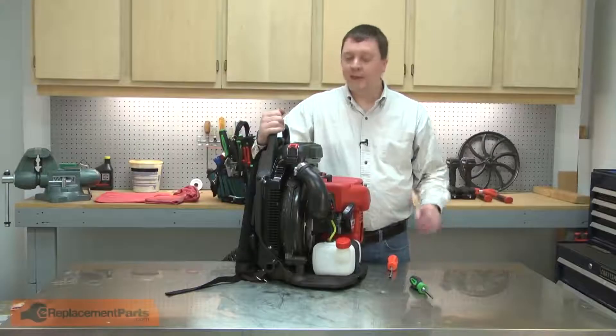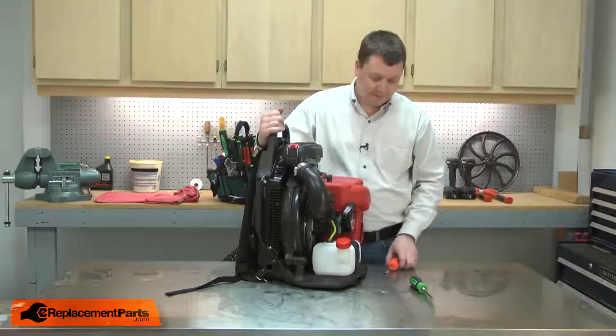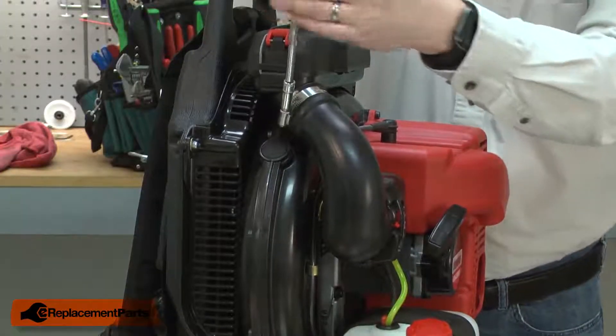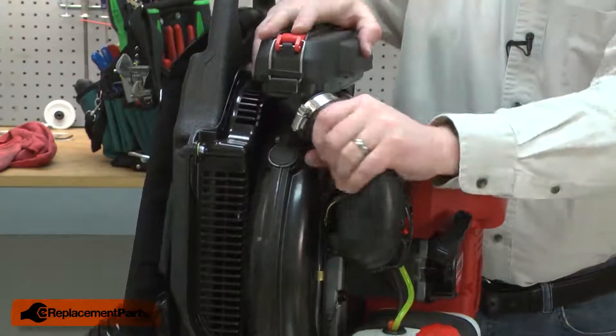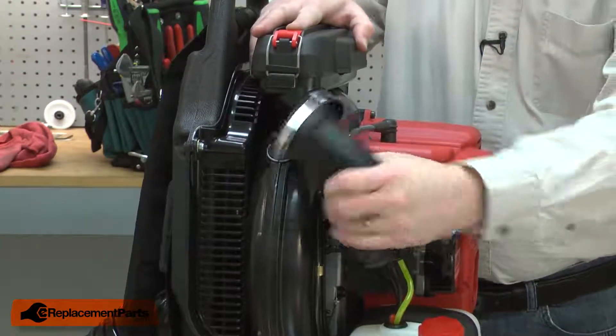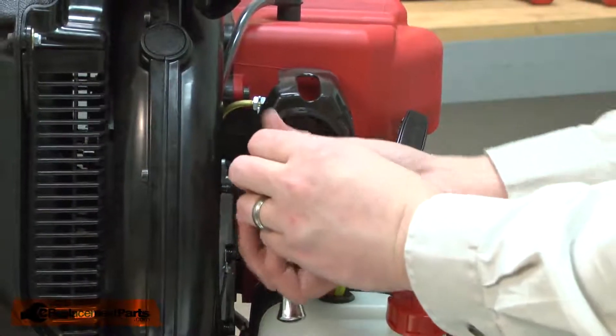I'll begin by removing the intake tube from the air filter housing and the carburetor base. Now, remove the screws that secure the base and the carburetor.